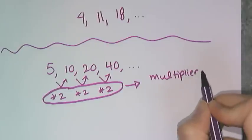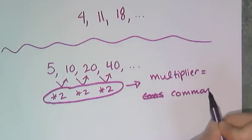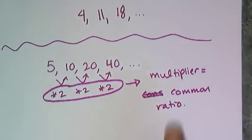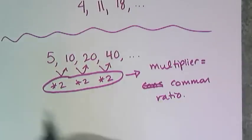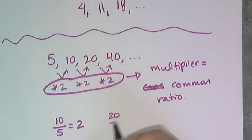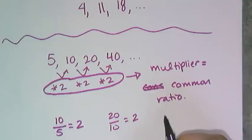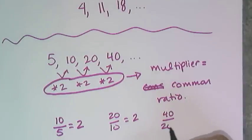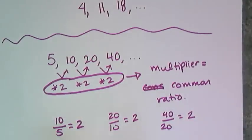The multiplier is also called the common ratio. And the reason why it's called the common ratio is because if I took a term like 10 and divided it by 5, the previous term, I'm going to get the common ratio, the 2. If I take 20 and I divide it by the previous term, I get the 2. If I take 40 and I divide it by its previous term, I get 2. And see how this 2 is common to each of these ratios? That's why it's called the common ratio.